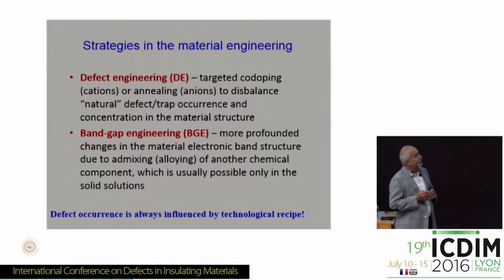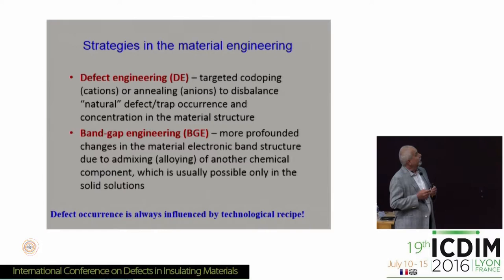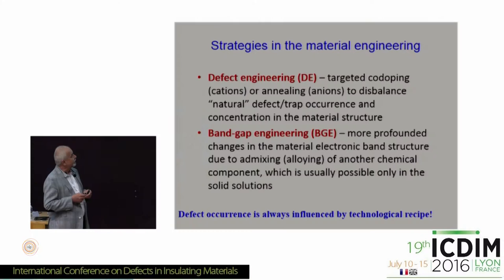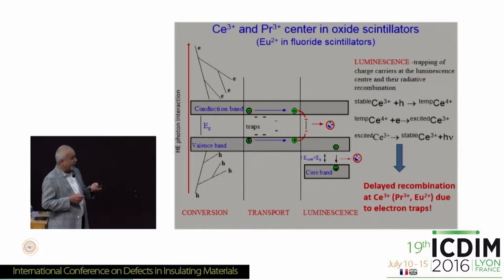You can see in the papers talking about defect engineering strategy or band gap engineering strategy. The first one is a classical approach where people use various kinds of codoping to optimize material regarding, for example, afterglow. Band gap engineering typically involves mixing components which still allow making a single crystal — working with solid solutions — and by this mixing you change the electronic band structure in a more profound way, which has consequences for trapping and all these processes.